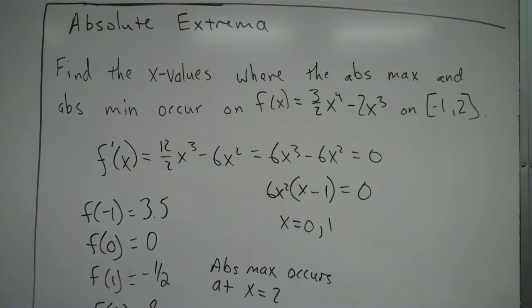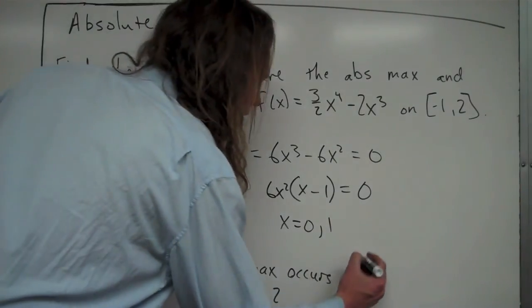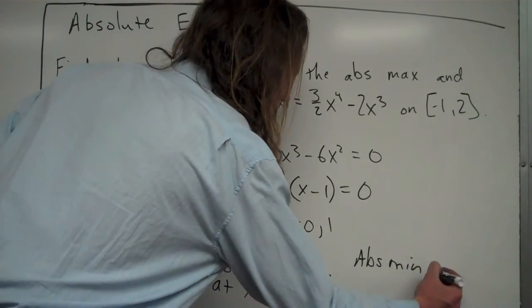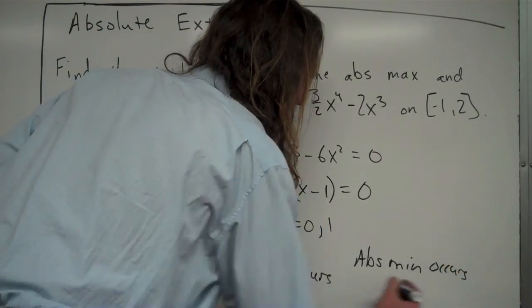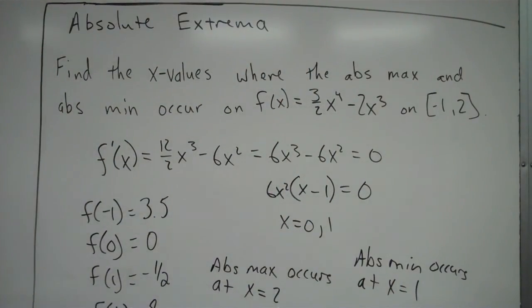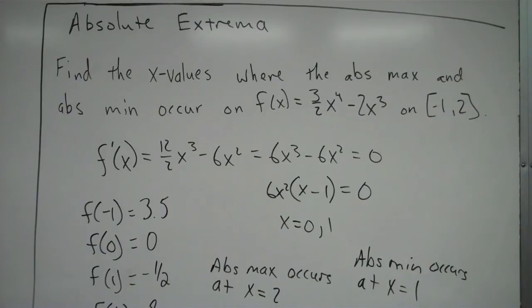The absolute minimum value is the smallest y value. So the absolute minimum value is -1/2. It occurs at x = 1. So the absolute minimum occurs at x = 1. There is an example of an absolute extrema problem.